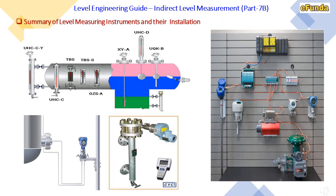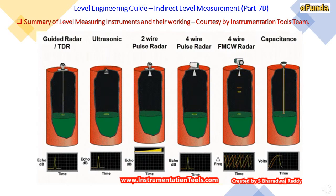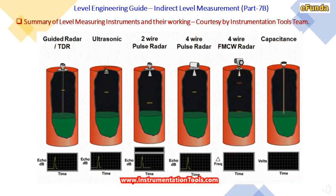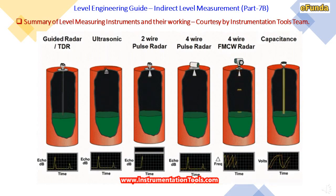Summary of level measuring instruments and their installation: a vessel is shown with various types installed, including magnetic level gauges, different types of level gauges, displacer type instruments, float type switches, DP transmitters, and auto measurement sections. These field devices are connected to I/O points and further to a PLC or control system to obtain controlled level output. The summary also shows, with courtesy from the Instrumentation Tool team, how various level devices are installed, their operation, and their performance achieved through their waveforms.